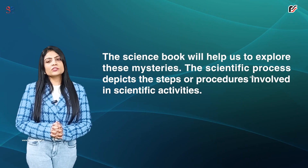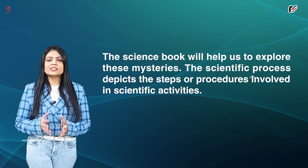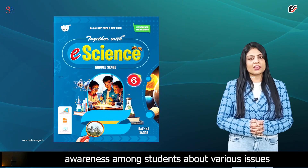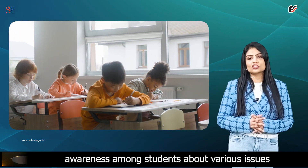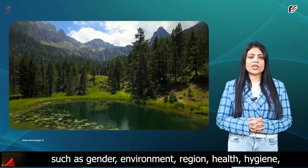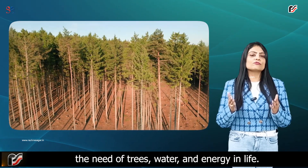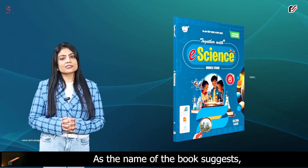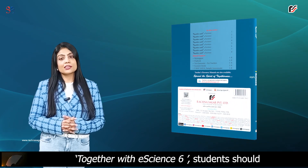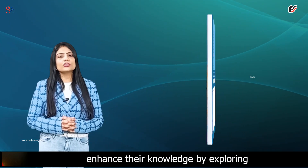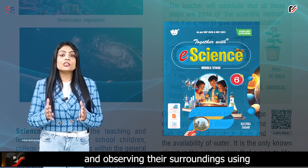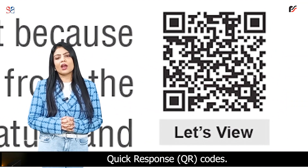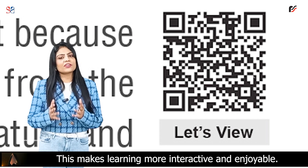The scientific process depicts the steps or procedures involved in scientific activities. The primary objective of this book is to increase awareness amongst students about various issues such as gender, environment, region, health, hygiene, the need of trees, water and energy in life. Together with eScience 6, students should enhance their knowledge by exploring and observing their surroundings using information and technology with the help of quick response QR codes. This makes learning more interactive and enjoyable.